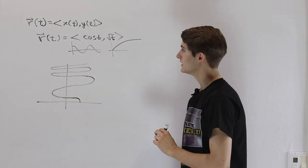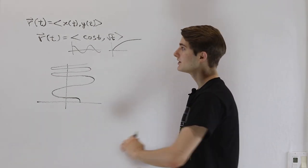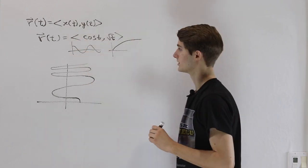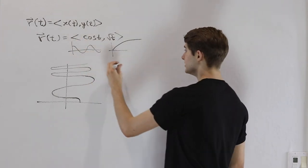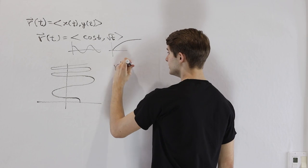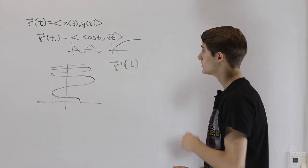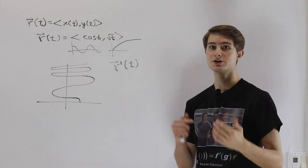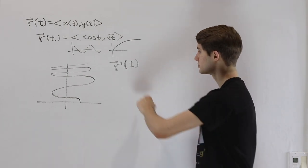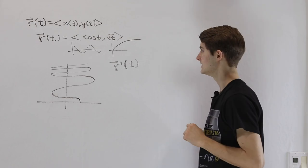Now what we want to start thinking about is how can we do calculus on these kinds of curves. In particular, what is the derivative of our vector function of t? So let's think about what that means. The derivative talks about how much something is changing with respect to, in this case, the variable t.